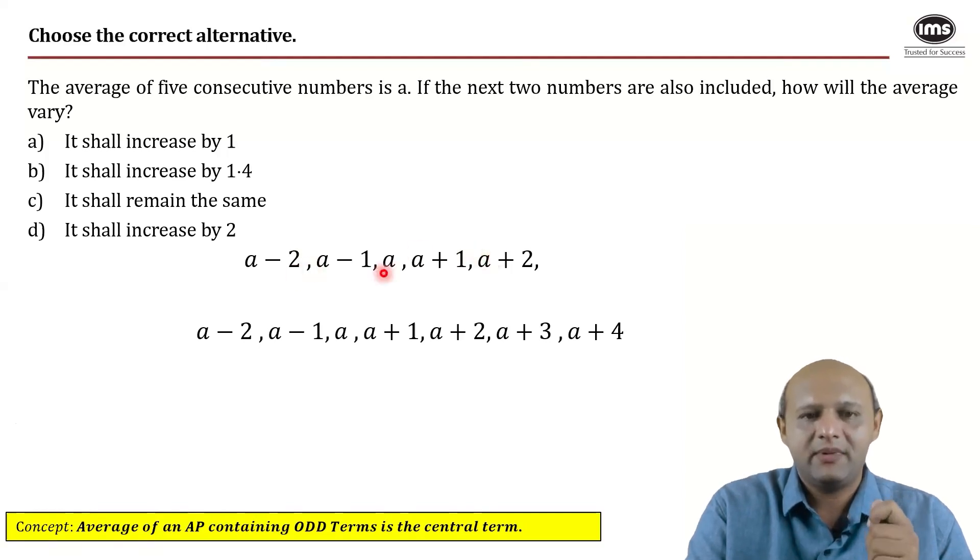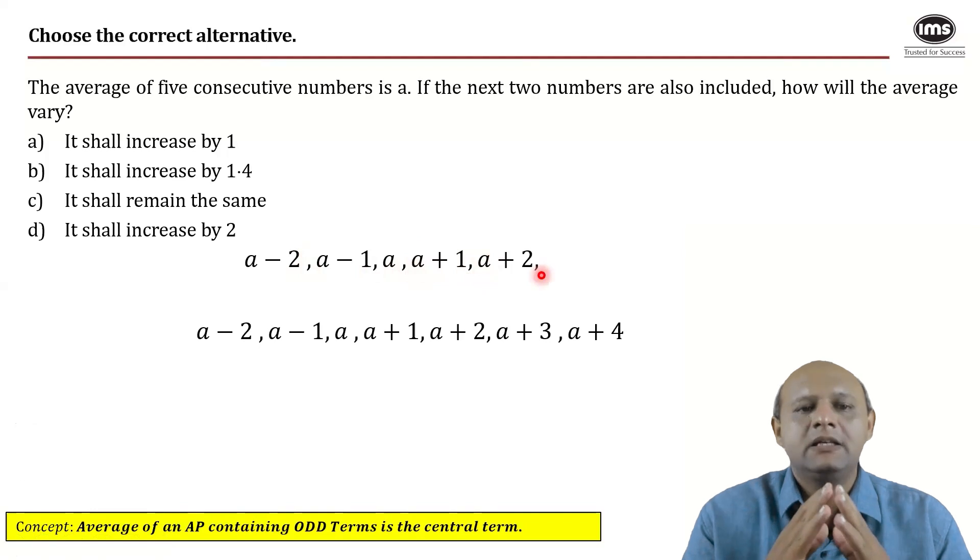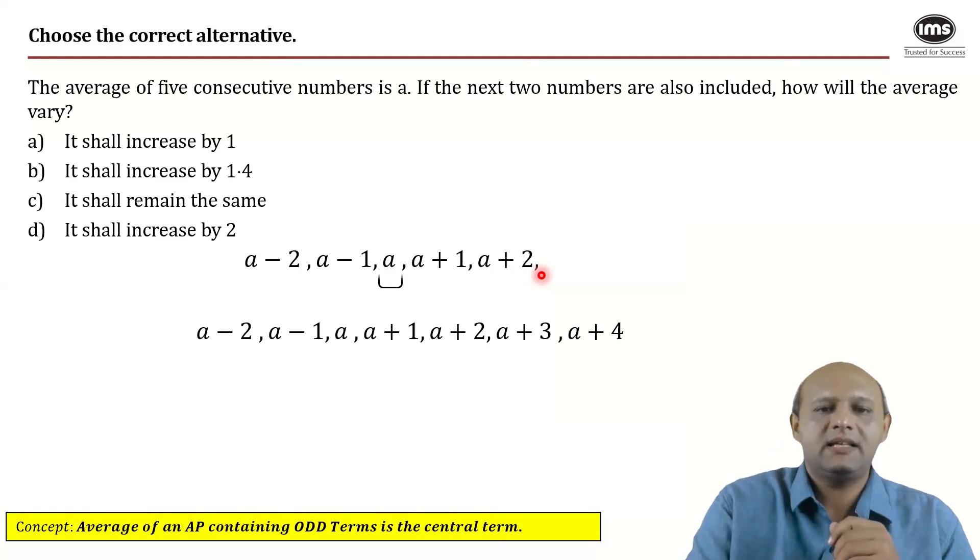a minus 2, a minus 1, a, a plus 1, a plus 2 is a set of numbers which are in arithmetic progression because the difference between successive terms is the same. Also, the next series will automatically be an arithmetic progression. If there are odd number of terms, then the average of such a series which is an arithmetic progression would in fact be the central term. So what is the average here? The average would be a. This is a property.